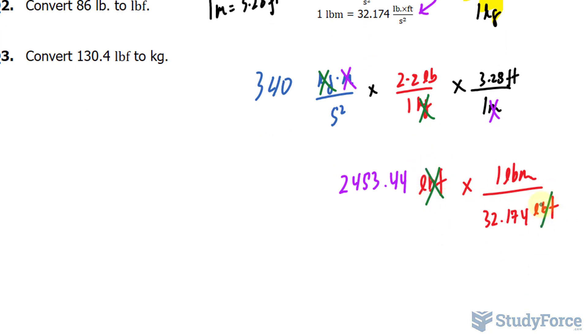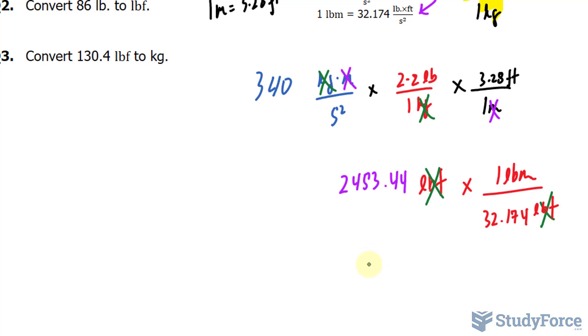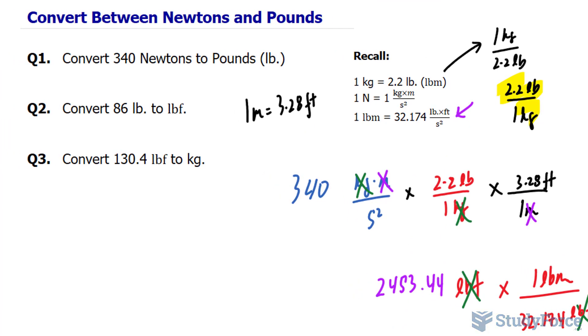These two will cancel out, leaving us with what we're looking for in pounds. So taking this number and dividing it by 32.174, we end up with 76 pounds, to the correct number of significant figures. 76 pounds on a scale is the same thing as saying 340 newtons.